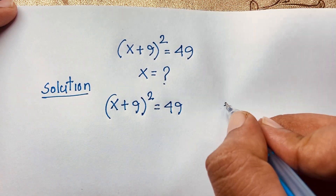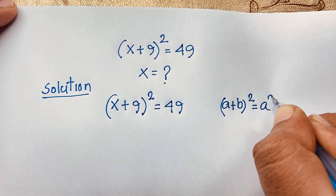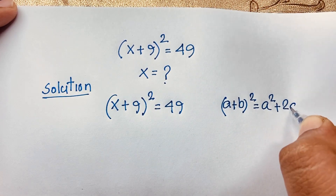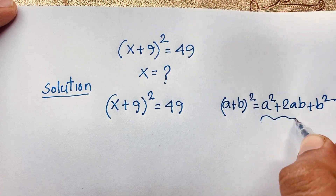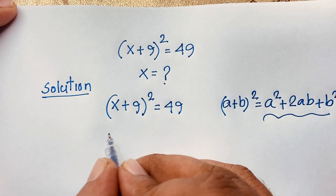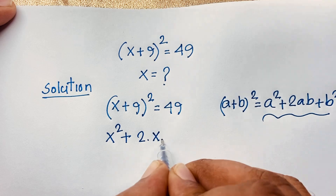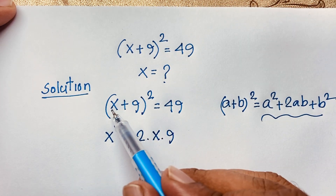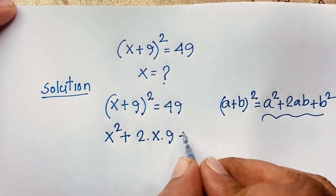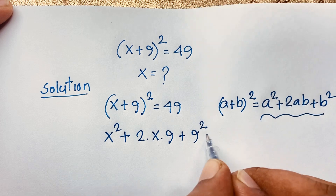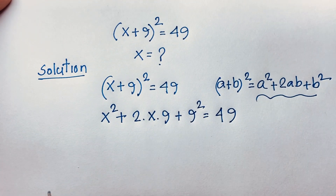We know that a plus b, whole to the power 2, equals a squared plus 2ab plus b squared. If I follow this formula here, I can see it will be x squared plus 2 times x times 9 — here a is x, b is 9 — so it will be 2ab plus b squared, meaning 9 squared, is equal to 49.